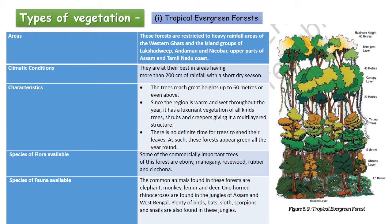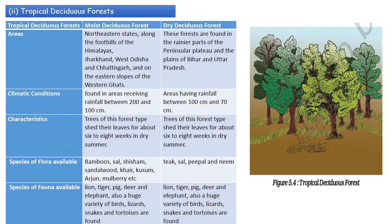The common animals found in tropical evergreen forests are elephant, monkey, lemur, and deer. One-horned rhinoceros are found in the jungles of Assam and West Bengal. Plenty of birds, bats, sloth, scorpions, and snails are also found in these jungles.